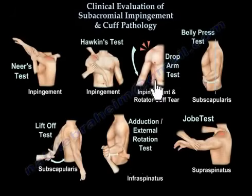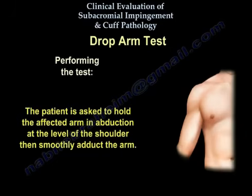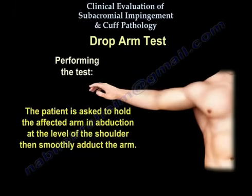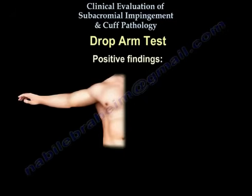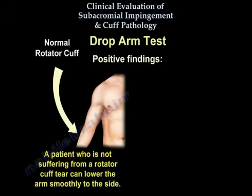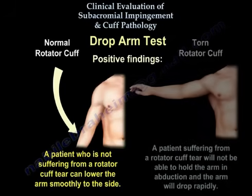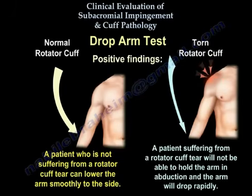Drop Arm Test. The patient will be standing or sitting upright. The patient is asked to hold the affected arm in abduction at the level of the shoulder, then smoothly lower the arm. In a patient who is not suffering from a rotator cuff tear, the patient can lower the arm smoothly to the side. A patient suffering from a rotator cuff tear will not be able to hold the arm in abduction and the arm will drop rapidly.